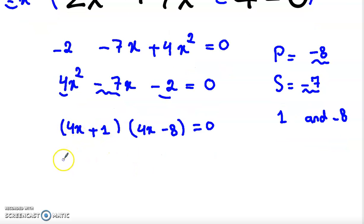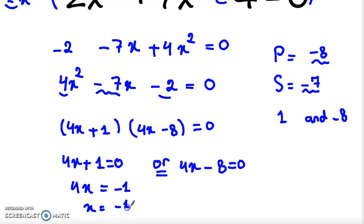And now either 4 x plus 1 equal to 0 or 4 x minus 8 equal to 0. So 4 x equals minus 1, x equals minus 1 over 4 or 4 x equals 8, then x equals 8 over 4, which is 2.